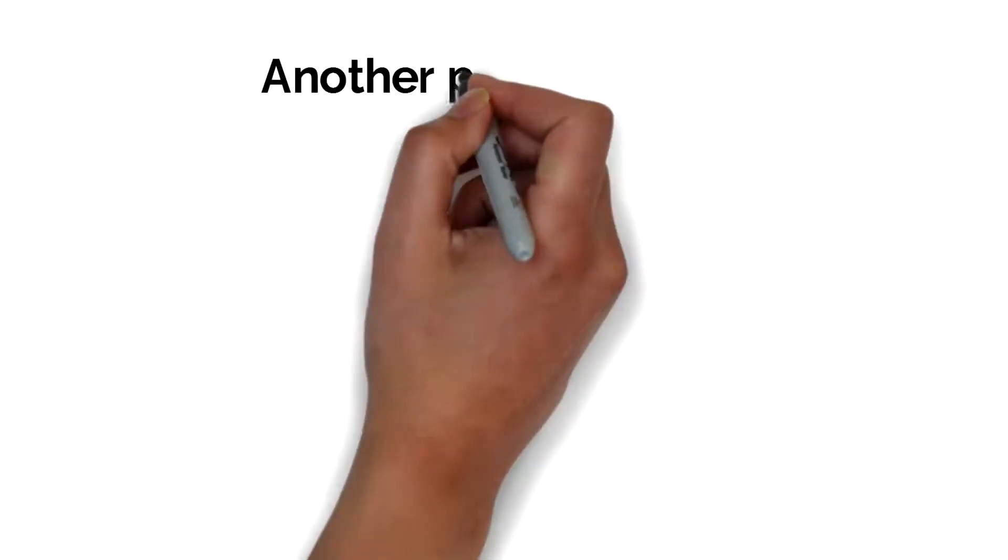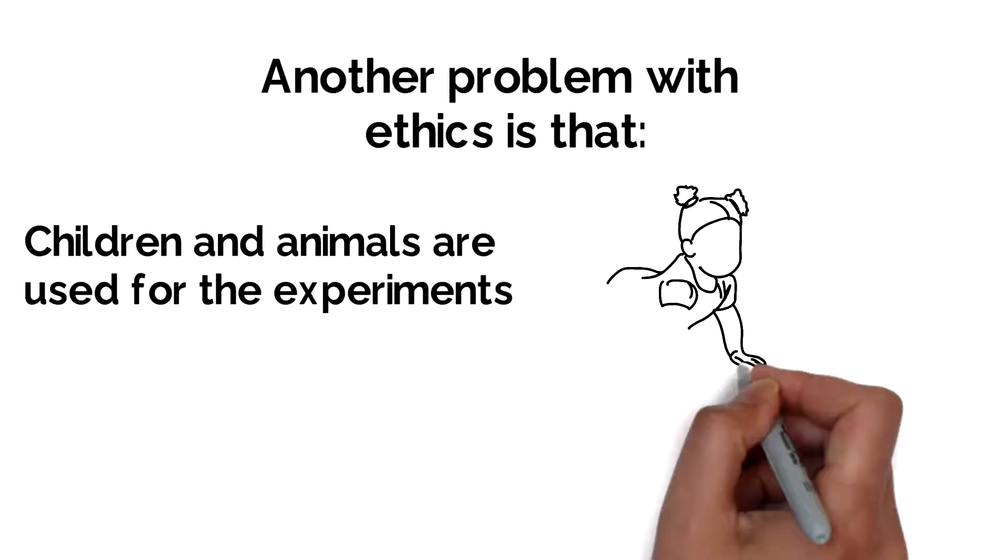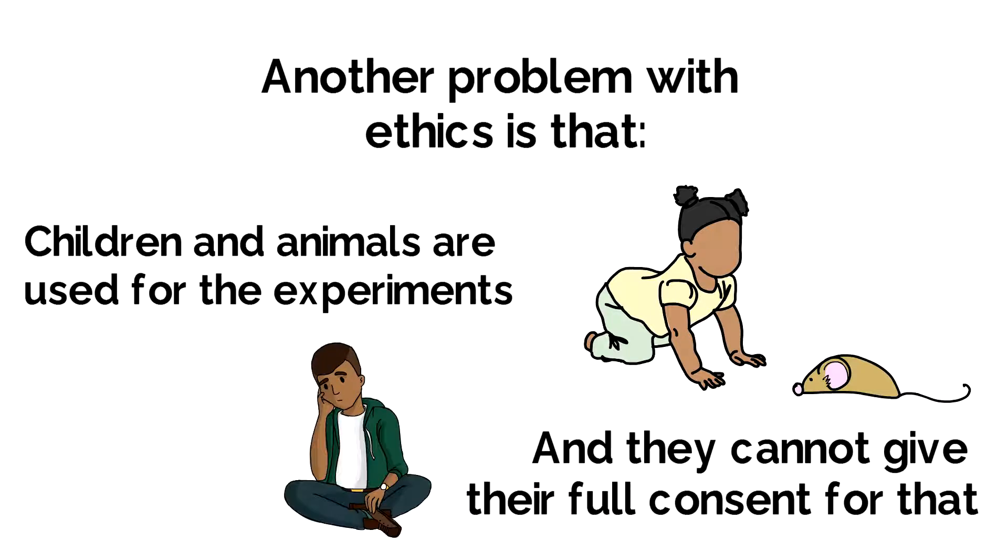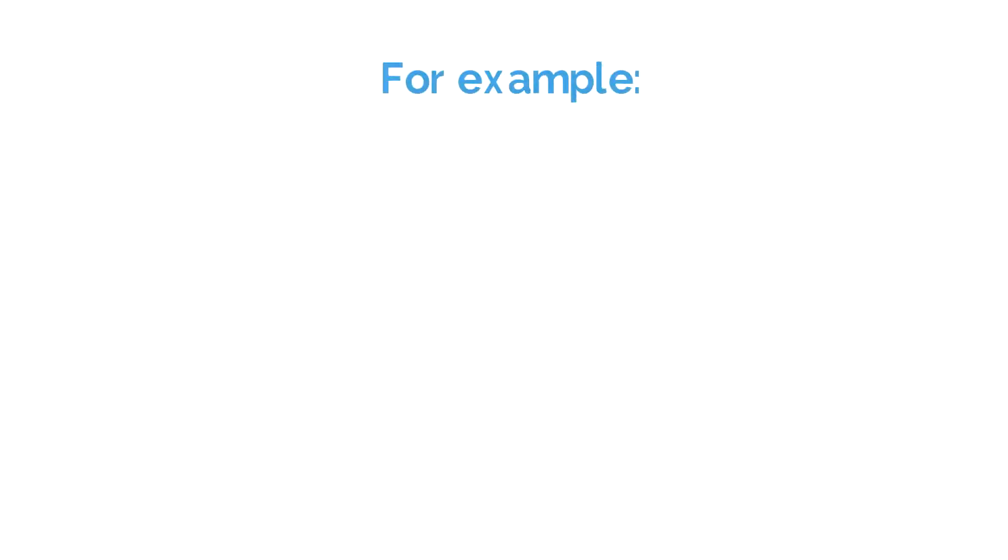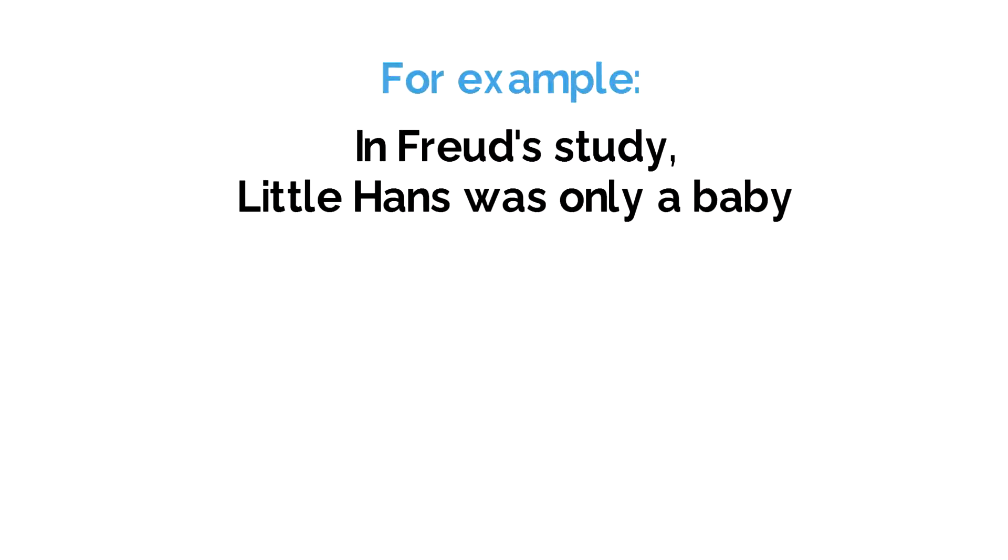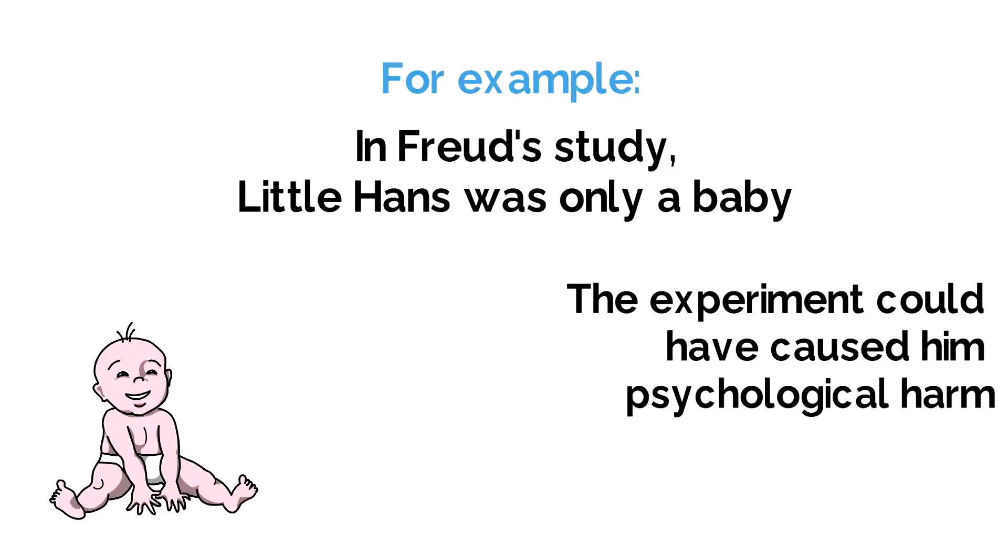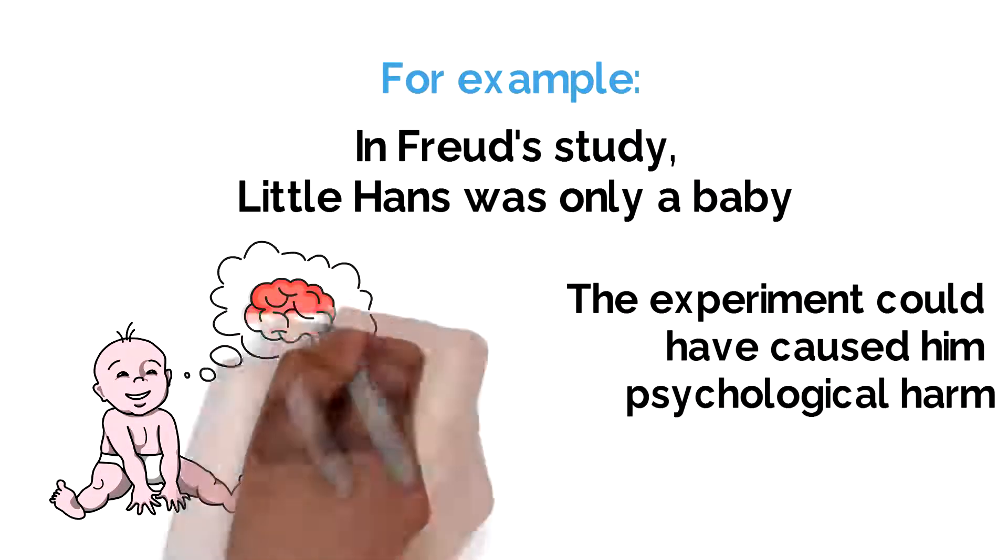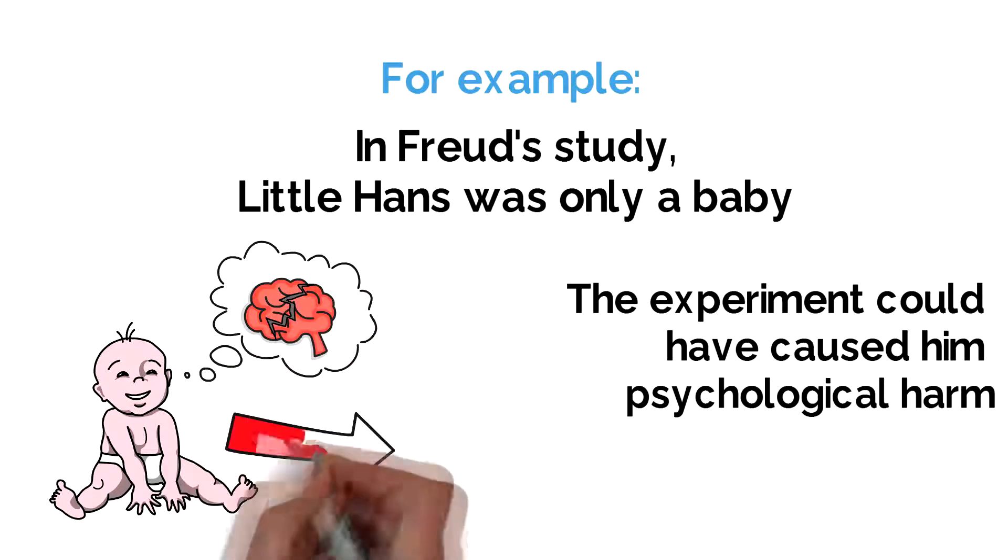There is also a huge problem with ethics, because children or animals are generally used who cannot really give their full consent. For example, in Freud's study of little Hans, Hans was only a baby, and so he could not give his consent, and the experiment could have caused him psychological harm, because he was taught by associative learning, classical conditioning, to not like objects which were once his favourites.